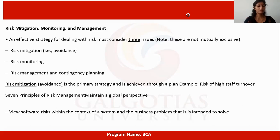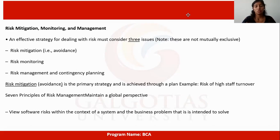Risk mitigation, monitoring, and management: an effective strategy for dealing with risk must consider three issues, which are not mutually exclusive — risk mitigation, which means avoiding the risk; risk monitoring; and risk management and contingency planning. Risk mitigation is the primary strategy and is achieved through a plan — for example, addressing the risk of high staff turnover.